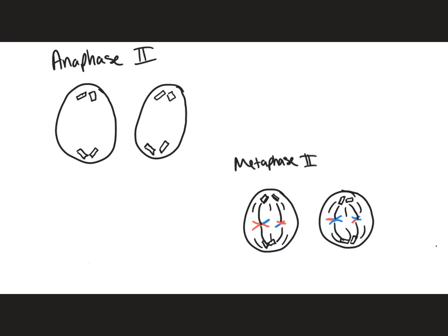This brings us into anaphase two, where the sister chromatids are going to be separating as they're pulled to opposite ends of the cell. Remember, this is going to be occurring in both cells at the same time — so both cells are simultaneously undergoing anaphase two.